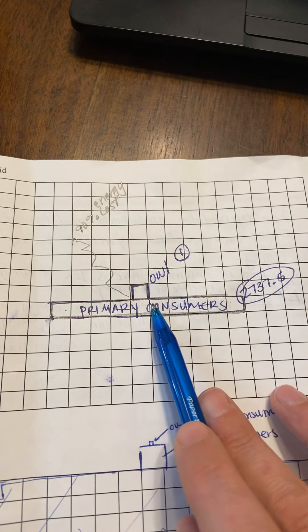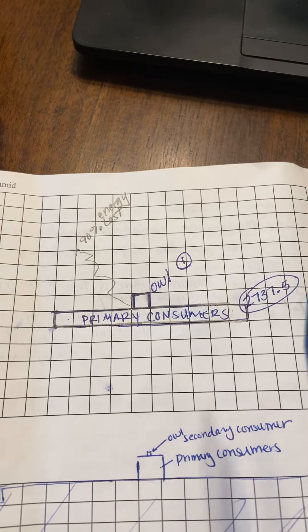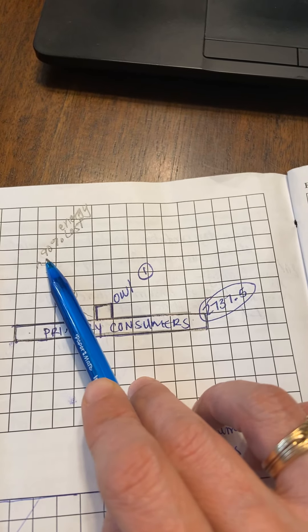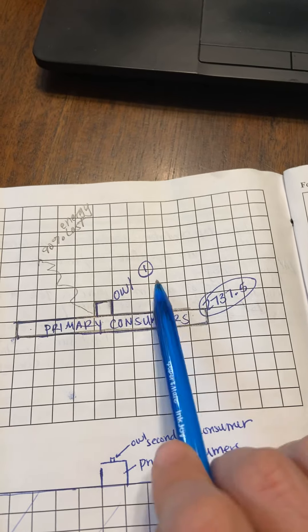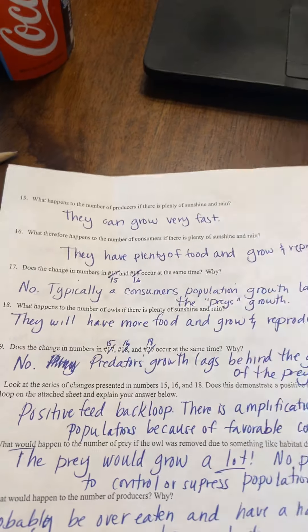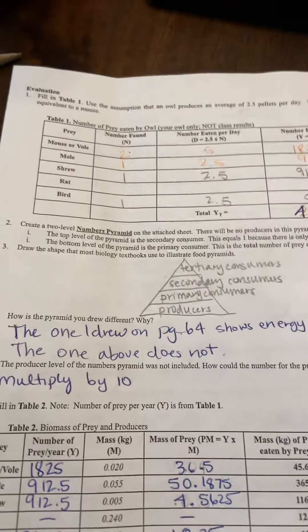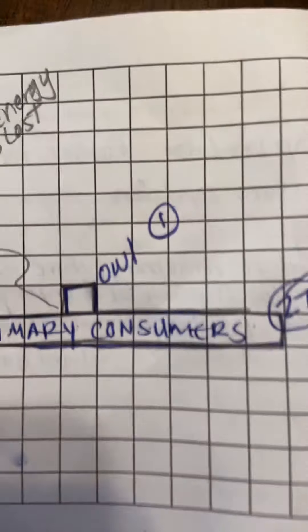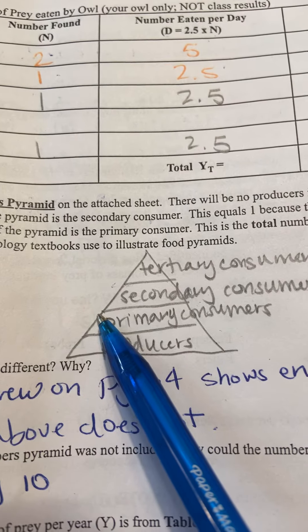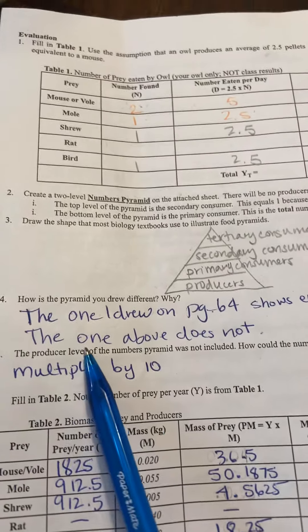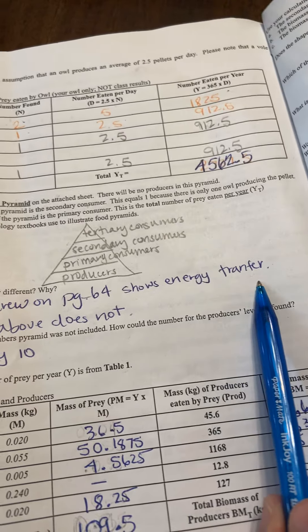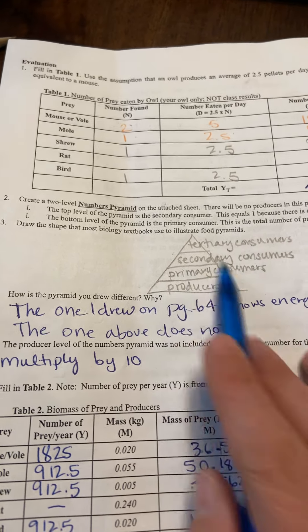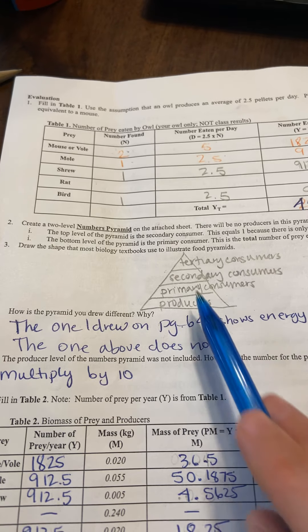So we're just showing these two levels of the food pyramid. We didn't show the producers, which would be down here. We notice that at least 90% of energy is lost here, but that's not exactly coming out with these numbers — they're going to have you do that with kilograms, with biomass or biota. So how is this pyramid different from the textbook pyramid? The one we drew on page 64 shows energy transfer, and the textbook one does not. This just shows a general idea, but the other one shows more of a larger energy transfer.